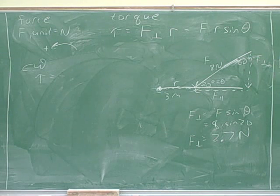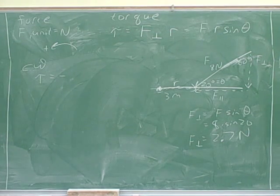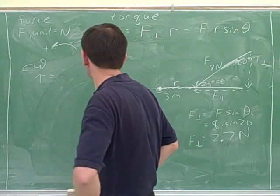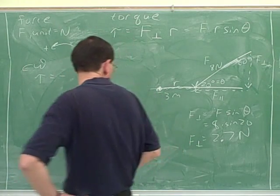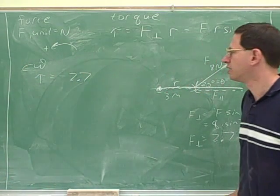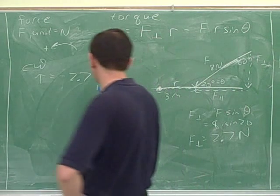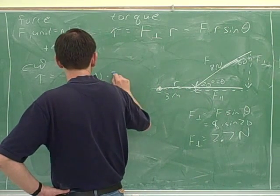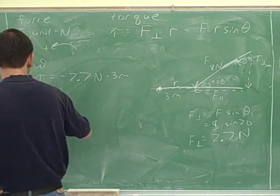Now we're ready for step six to determine the magnitude of the torque. F perpendicular times R. Well, you have all the pieces that we need for that already. So what are we plugging in for F perpendicular in this problem? 2.6. And what are we plugging in for R? 3.